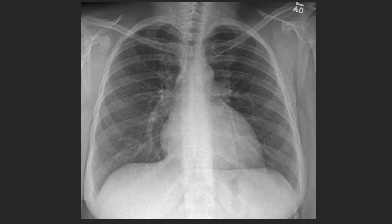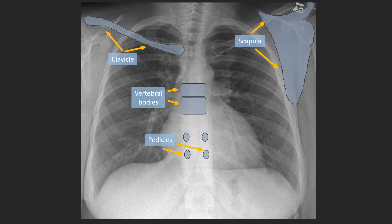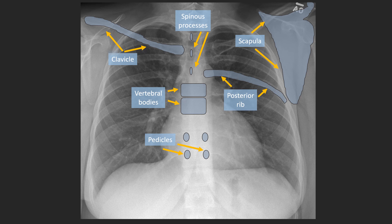Moving on to bones and soft tissues: the clavicle extends from the midline laterally and connects to the scapula via the acromion process. In the midline, the rectangular vertebral bodies are visible, and arising from them posteriorly are the pedicles, which appear circular because we are looking at them on end. The spinous processes are the most posterior aspects of the vertebral bodies and appear ovoid because they are elongated structures seen on end. The ribs have a posterior portion that contacts the vertebral body and swing anteriorly; the very anterior aspects of the ribs are not seen because they are cartilaginous.